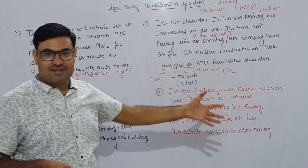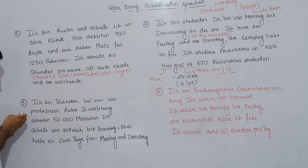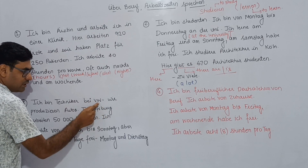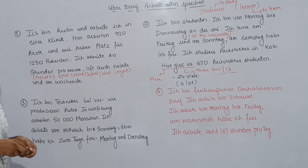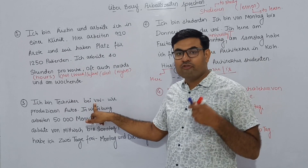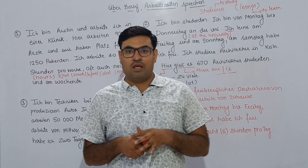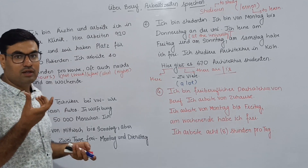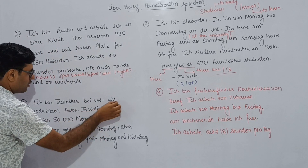Next one. Let us read it together. 'Ich bin Techniker.' The letters C-H sometimes have a sound of 'kh' and sometimes 'sh' — we will be learning when in upcoming classes. 'Ich bin Techniker bei VW.' We do not say it as 'VW' — we say it as 'Fau-Vee.' This means Volkswagen. In Germany the company is called 'Fau-Vee.' So I am a technician at VW.